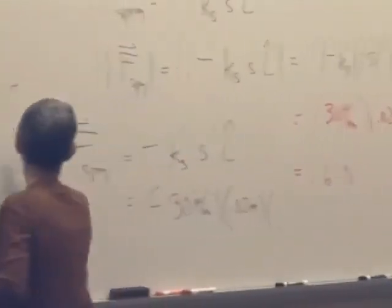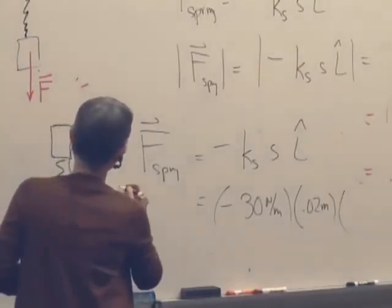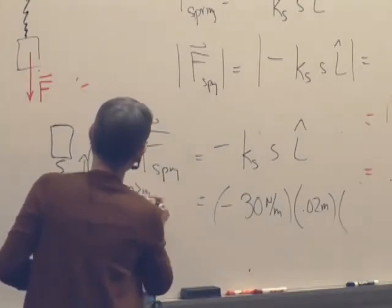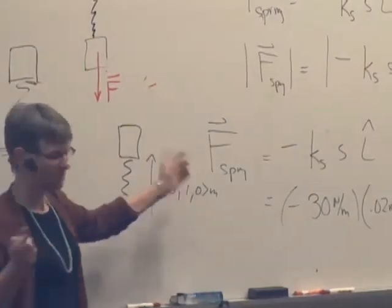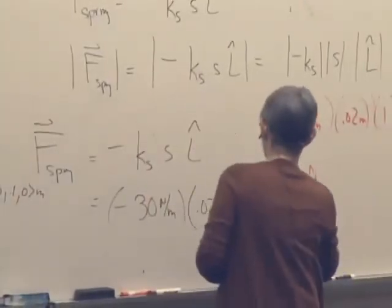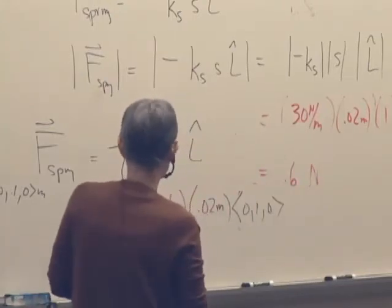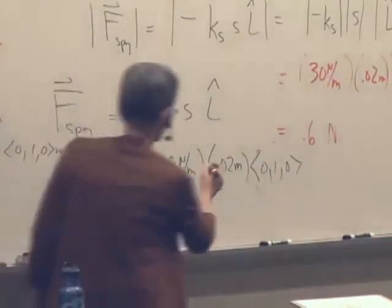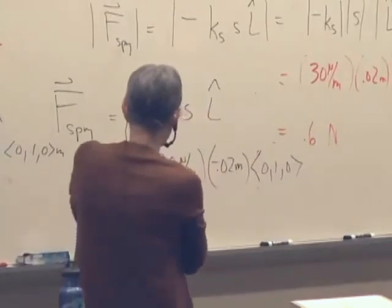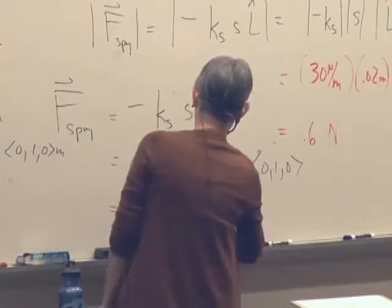Now remember l hat in this case. So l was 0.10 meters. What's l hat, just by inspection? What's the unit vector in that direction? 010. So this is going to come out to 0.60 newtons.